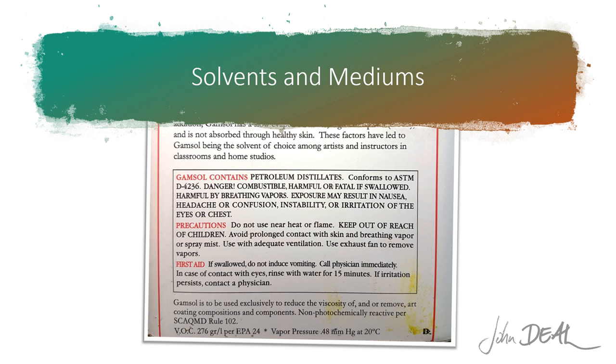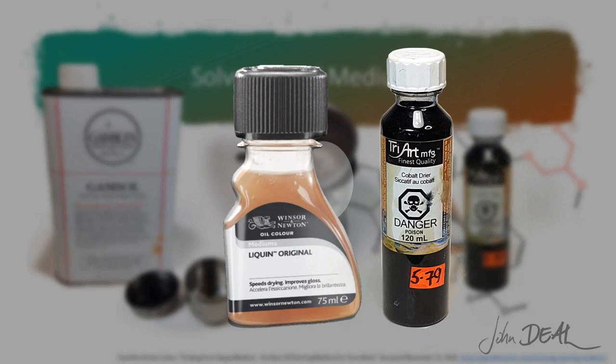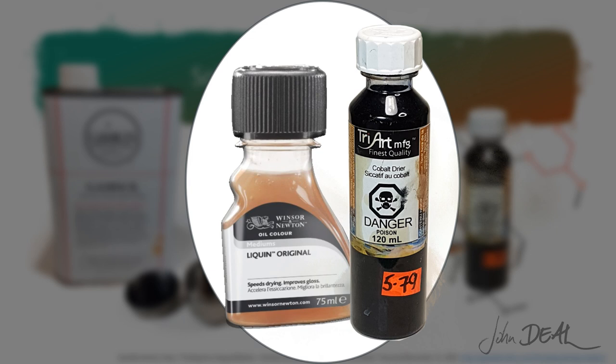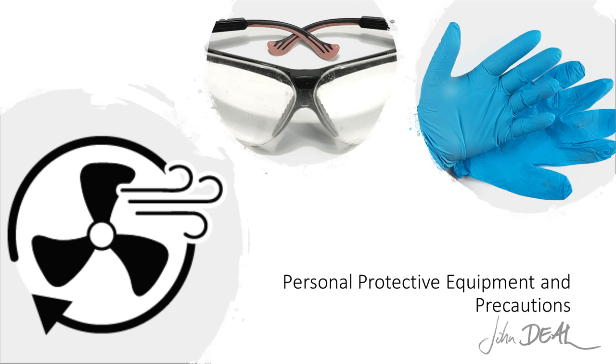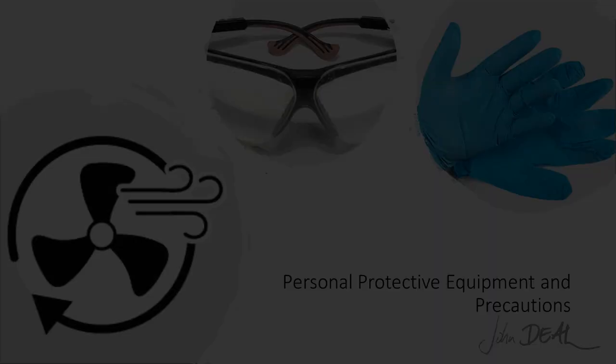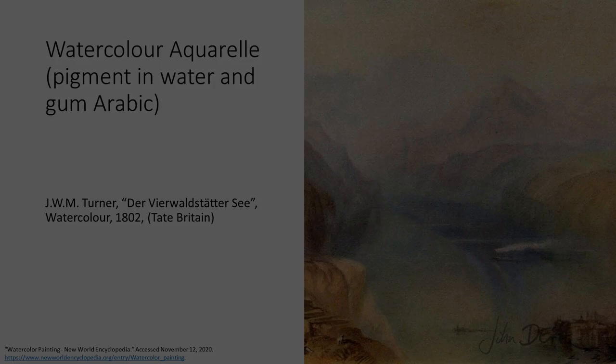Mediums such as alkyds or other siccatives can be added to reduce the drying time. Oil painting mediums often contain toxic chemicals like petroleum distillates. There are some particularly nasty ones like cobalt dryers, a siccative that aids in the drying process, making oils dry faster. Alkyd mediums are commonly used for glazing to reduce drying times and to alter surface quality to gloss or matte. However, these mediums are toxic and should be avoided unless precautions are taken. Adequate ventilation and personal protective equipment need to be used to mitigate any risk of harm.